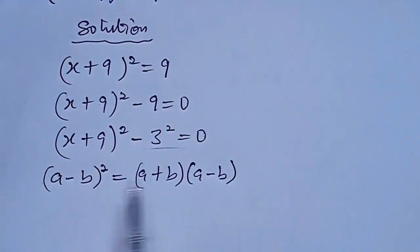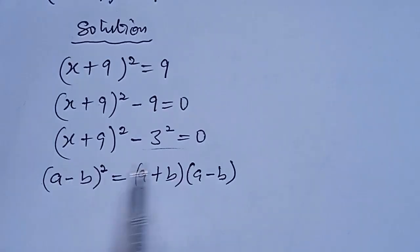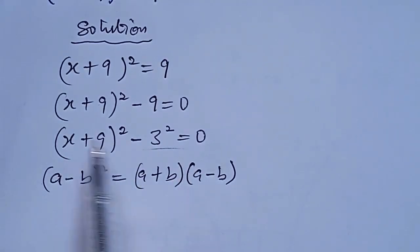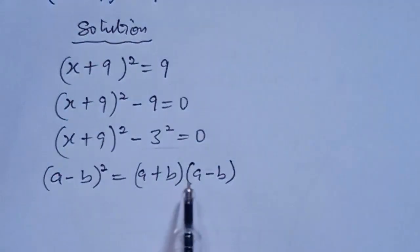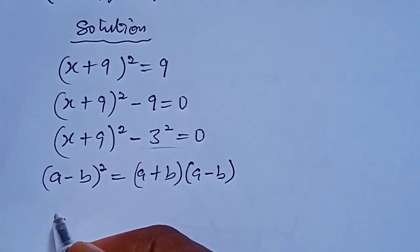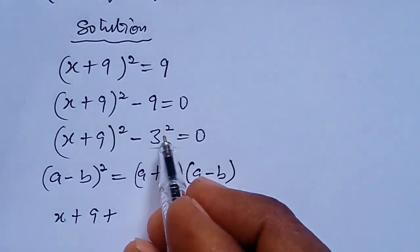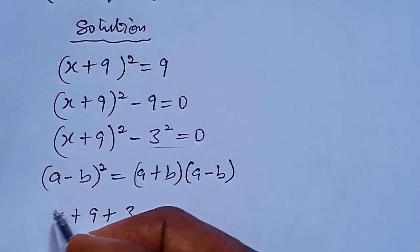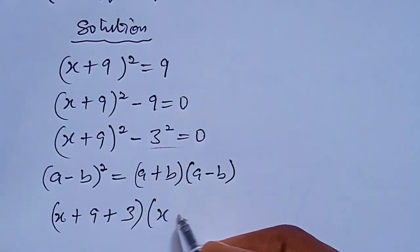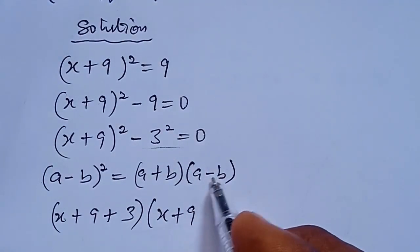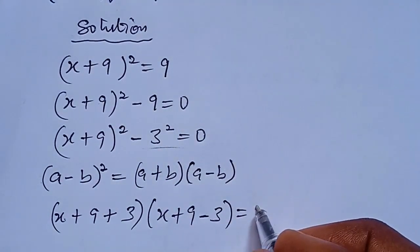So if we use this approach, considering this is in the form of difference of 2 squares, then we can put the resulting factorization in this form as well. This will now be written as x plus 9 plus 3 into bracket, then open another bracket, x plus 9 minus 3, so we now put everything equal to 0.